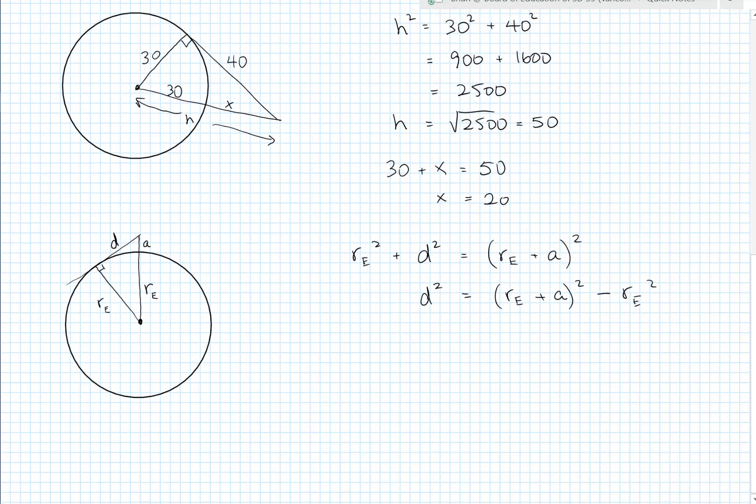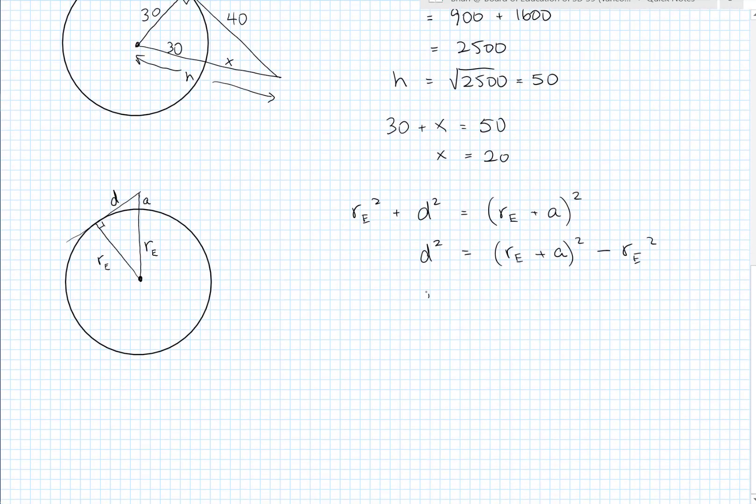And we can go a little further. We can say, well, we're actually interested in D. So let's take the square root of both sides. And we get the square root of RE plus A squared minus RE squared.